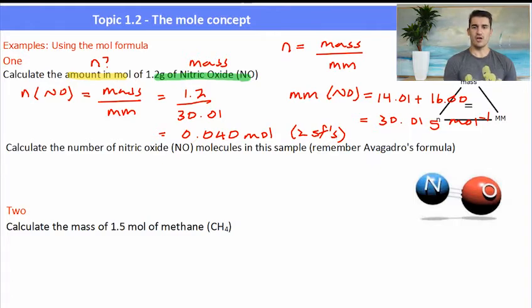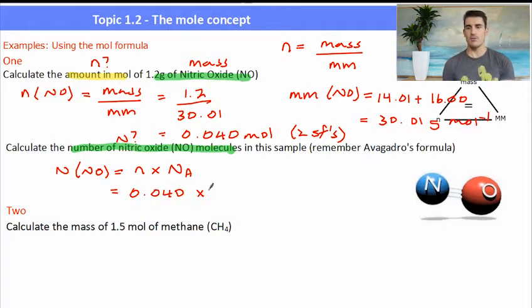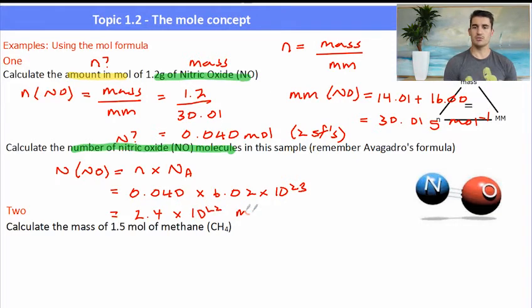Calculate the number of nitric oxide molecules in this sample. Well that's going back to the first video where we need to find big N. Big N of NO equals mole times Avogadro's number, which is the amount in mole which we found, 0.040 multiplied by 6.02 times 10²³. Putting those into the calculator, remember to keep the value from part one in your calculator and then just multiply it to avoid truncation. We get 2.4 times 10²² molecules.